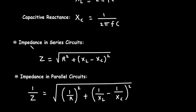Impedance in series circuits: Z = √(R² + (XL − XC)²). For impedance in parallel circuits: 1/Z = √((1/R)² + (1/XL − 1/XC)²).